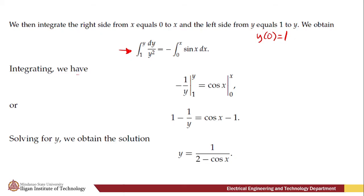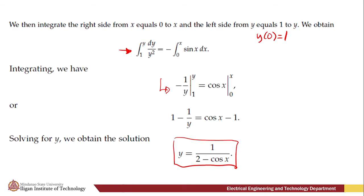Upon integrating, we have −1/y evaluated from 1 to y equals cos x evaluated from 0 to x. Evaluating, we get 1 − 1/y = cos x − 1. Then solving for y, we obtain the explicit solution y = 1/(2 − cos x). That is the step-by-step process on finding a solution of a separable variable equation.